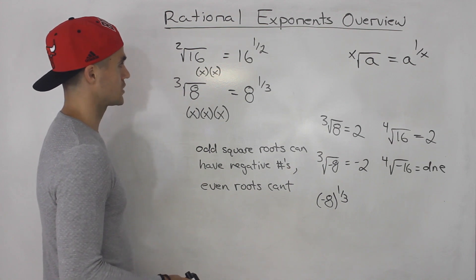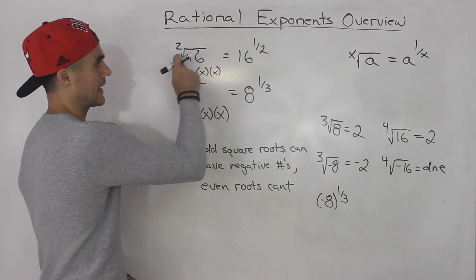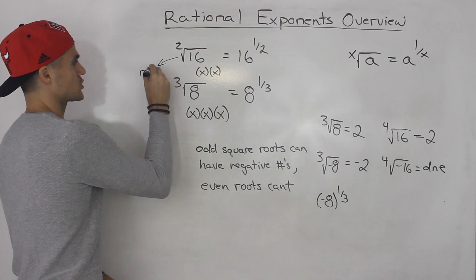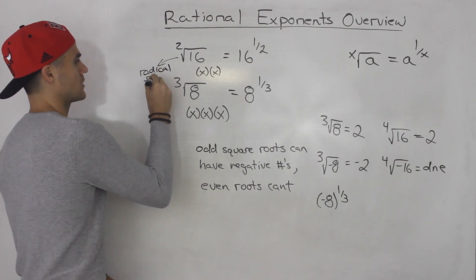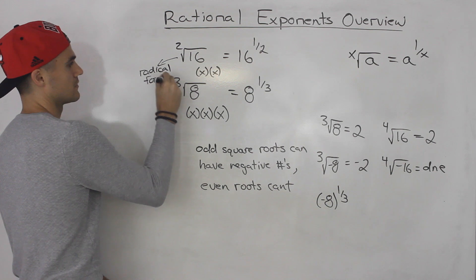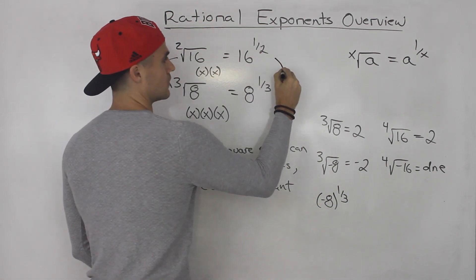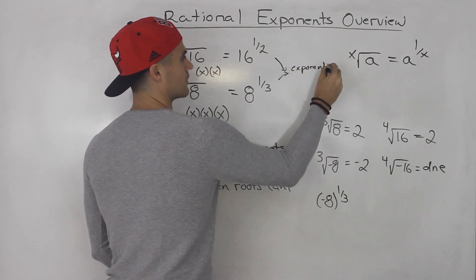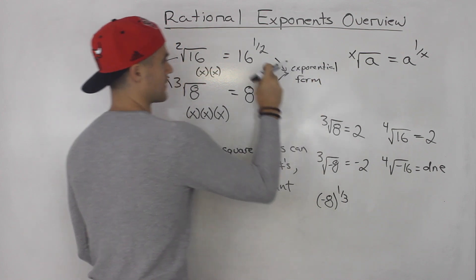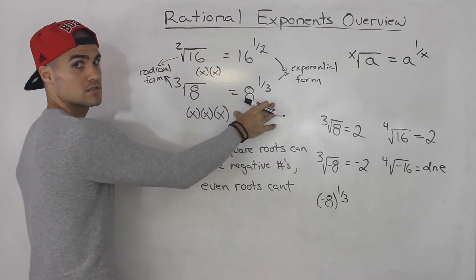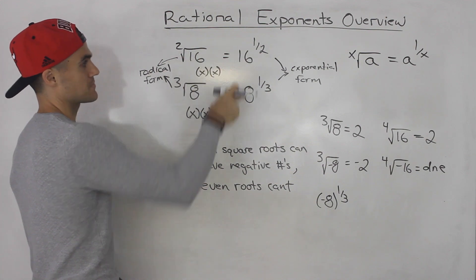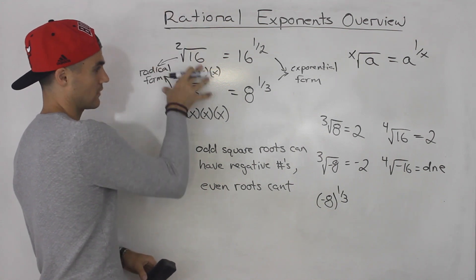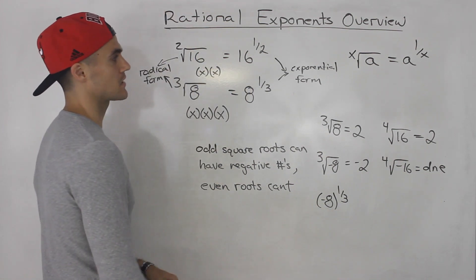Another thing to mention: there are usually names for these two forms. The radical expressions with the root symbol are called radical form. The equivalent expressions with fractional exponents are called exponential form. Sometimes they'll give you exponential expressions with rational exponents and ask you to convert them to radical form, or give you radical expressions and ask you to convert to exponential form.